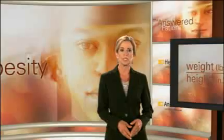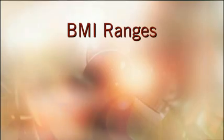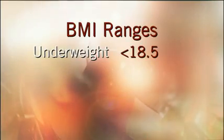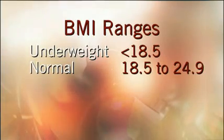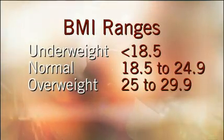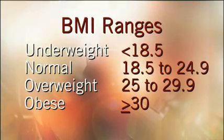BMI is the most common tool in determining obesity. It's a formula that estimates body fat by comparing your relative weight to your height. It's calculated by dividing your weight in pounds by your height in inches squared, then multiplying that value by 703. There are four ranges of BMI for adults: below 18.5 is underweight, 18.5 to 24.9 is normal or healthy, 25.0 to 29.9 is overweight, and 30 and above is obese.